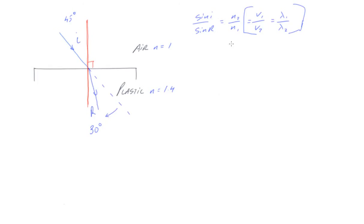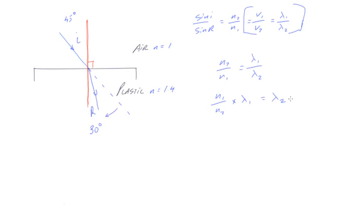In this example, we're going to see what happens with the change in wavelength as light goes through two mediums. We have N2 divided by N1 is equal to Wavelength 1 divided by Wavelength 2. Rearranging this, I end up with N1 divided by N2 times Wavelength 1, which is equal to the new wavelength that will be in the plastic.